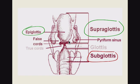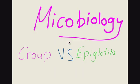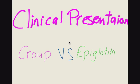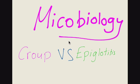This is the first difference between croup and epiglottitis. Next, the microbiology. Croup is mostly caused by viral causes, mainly the parainfluenza virus, but also influenza A, B, and RSV. While epiglottitis is caused mainly by bacterial causes, and especially by H. influenzae.